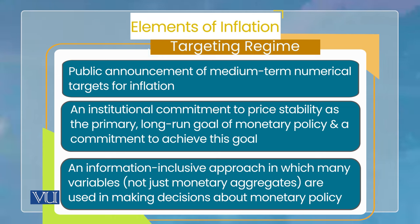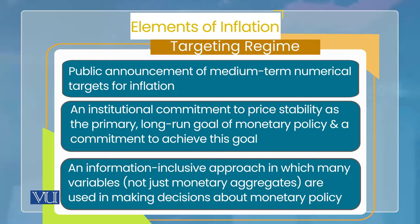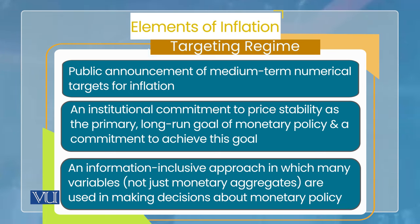پہلا element یہ ہے کہ ایک public announcement ہونا چاہیے medium-term inflation target کی، اور وہ numerical ہونا چاہیے — مثلاً 5% کا medium-term target، جس میں تین یا چار سال کا average inflation rate 5% ہو۔ اور جب یہ numerical target announce کر دیا جائے تو وہی inflation target، inflationary expectations کا nominal anchor بن جاتا ہے — کیونکہ price stability primary goal ہے اور nominal anchor inflationary expectations کو anchor کرتا ہے۔